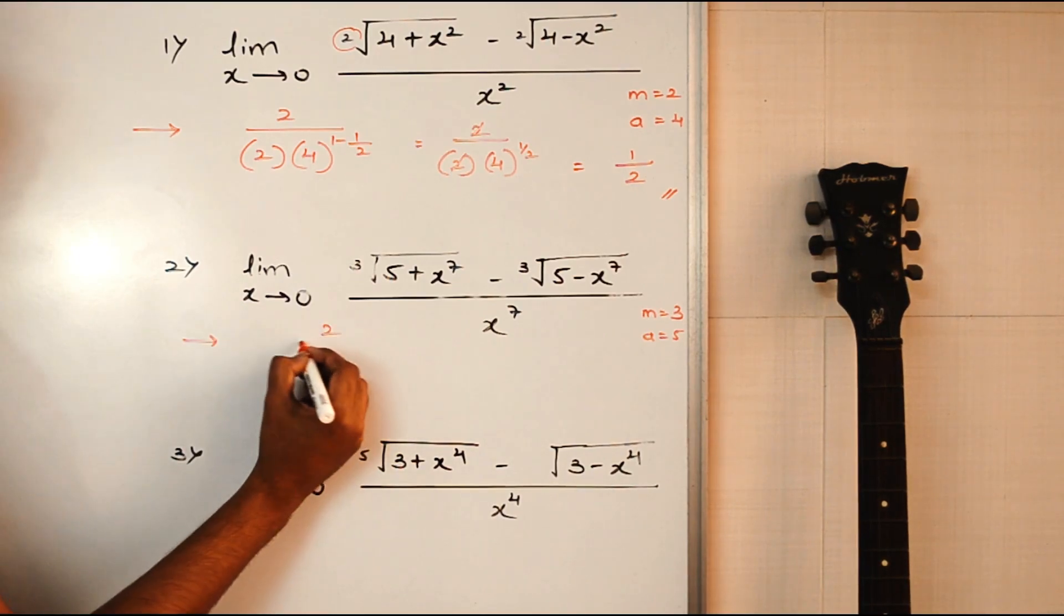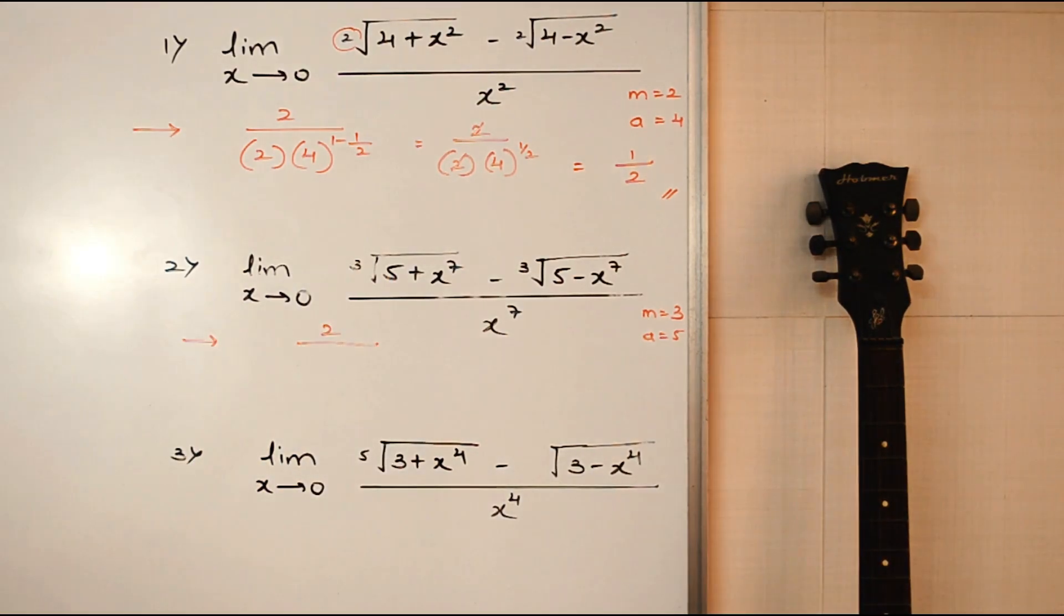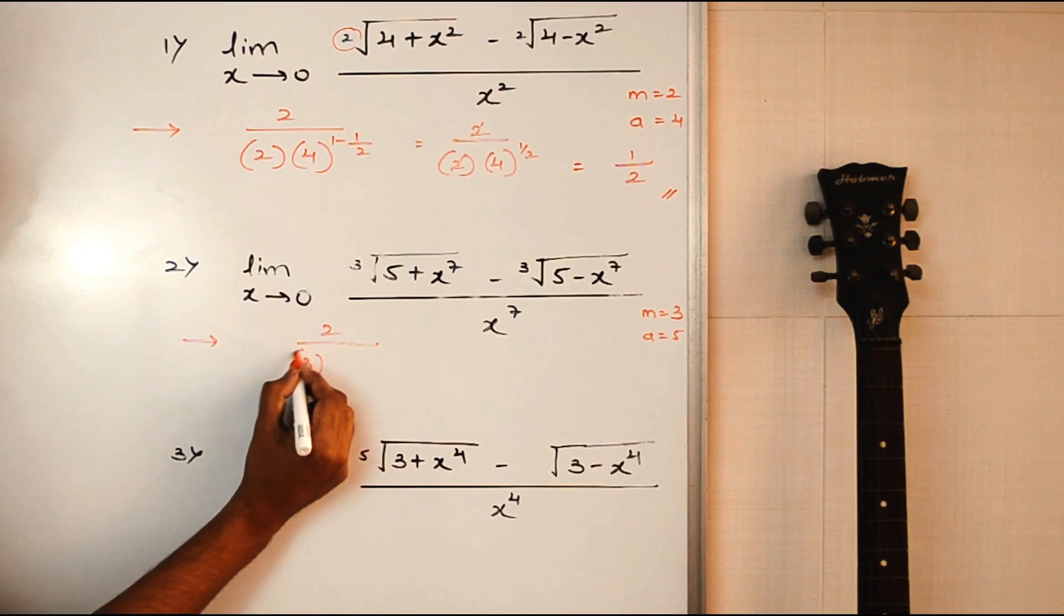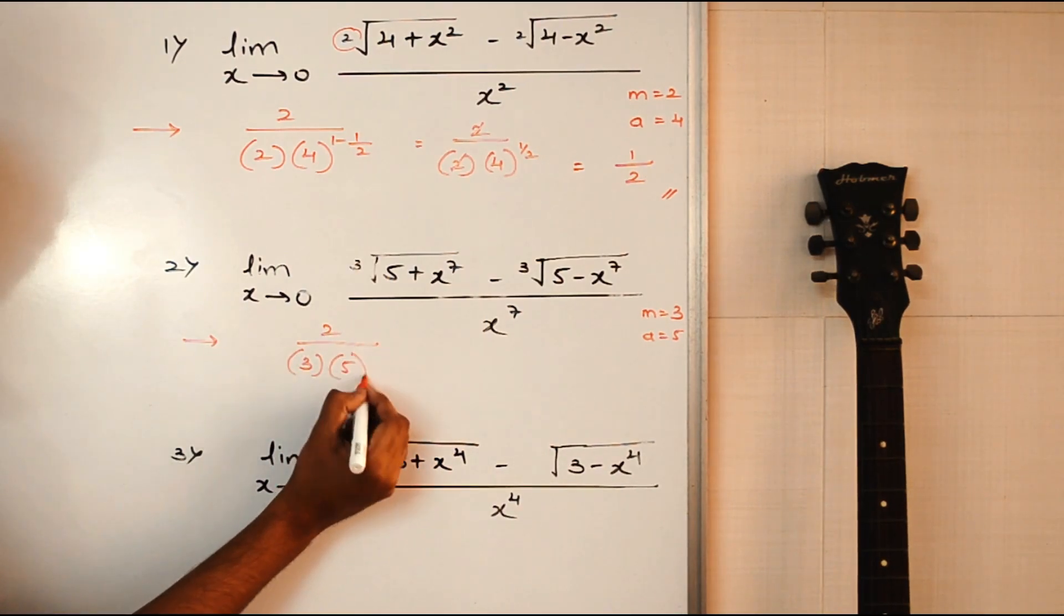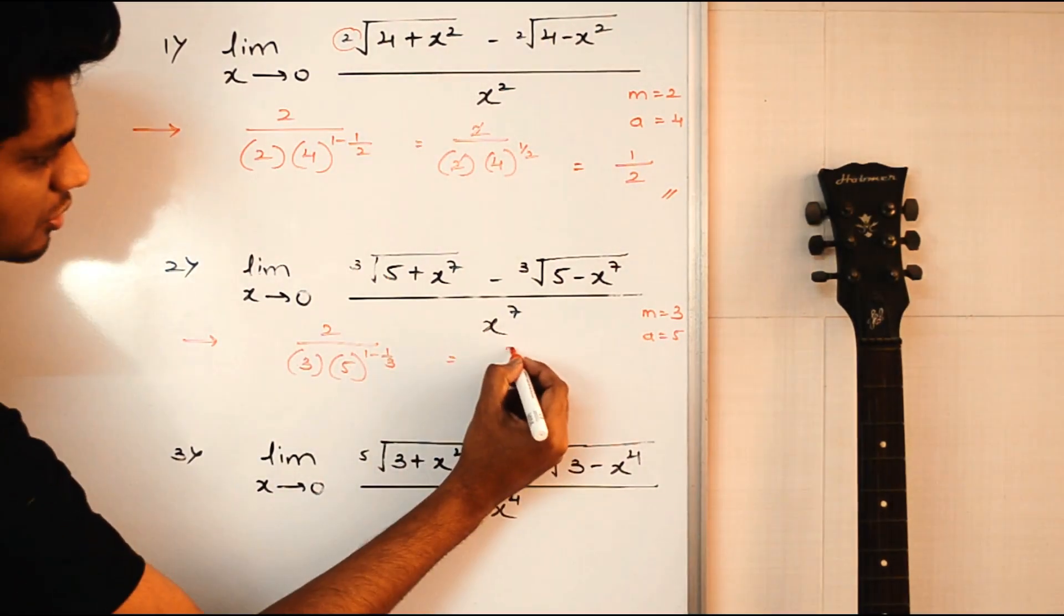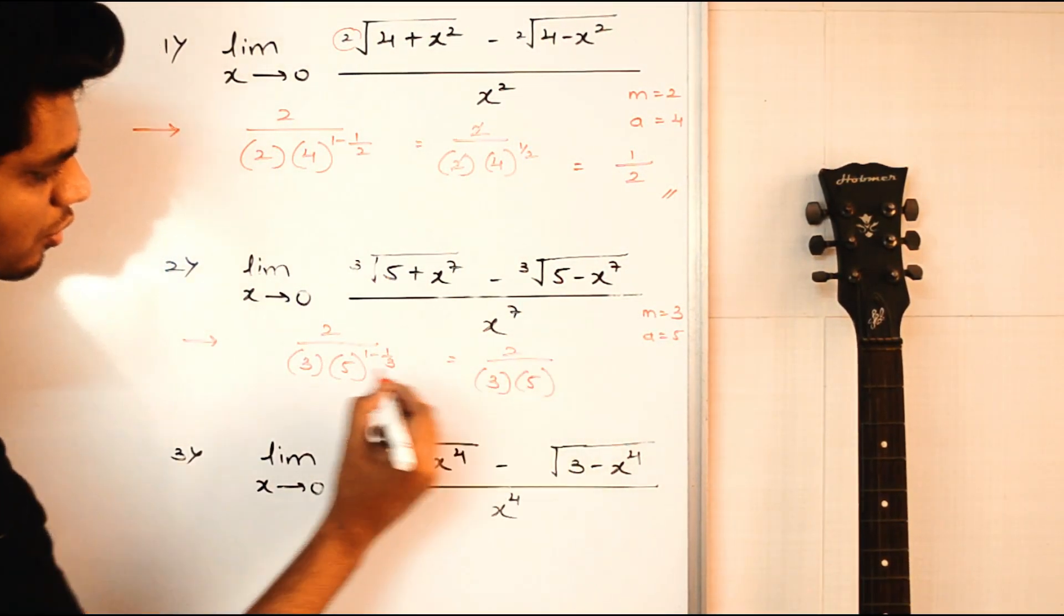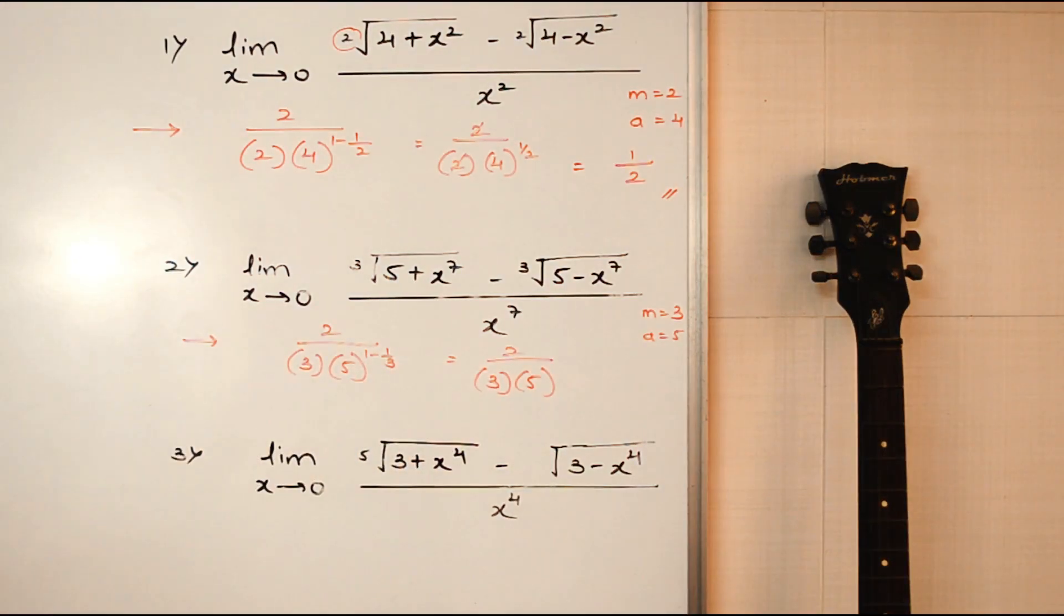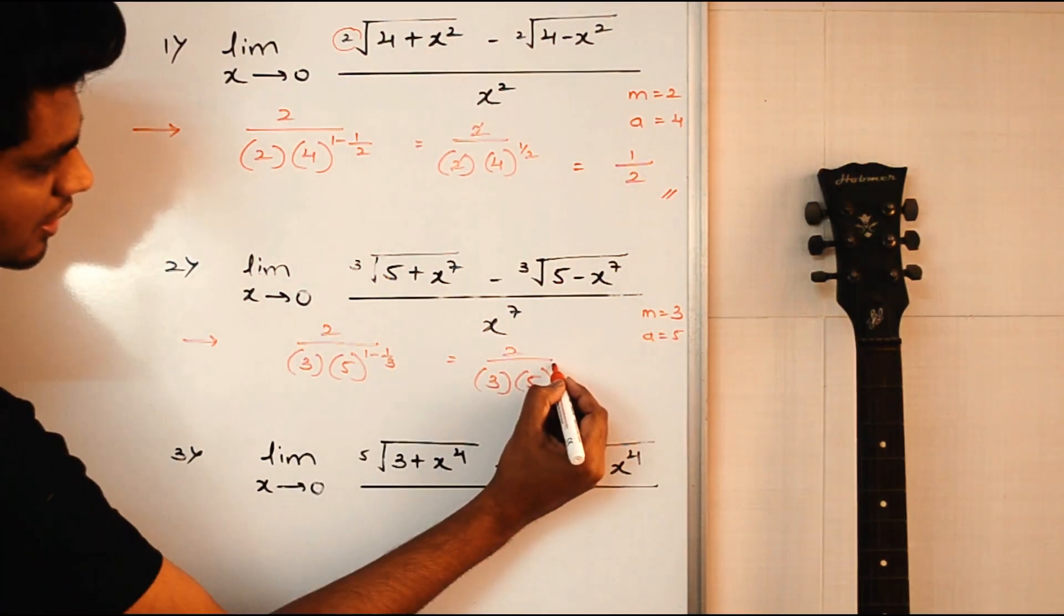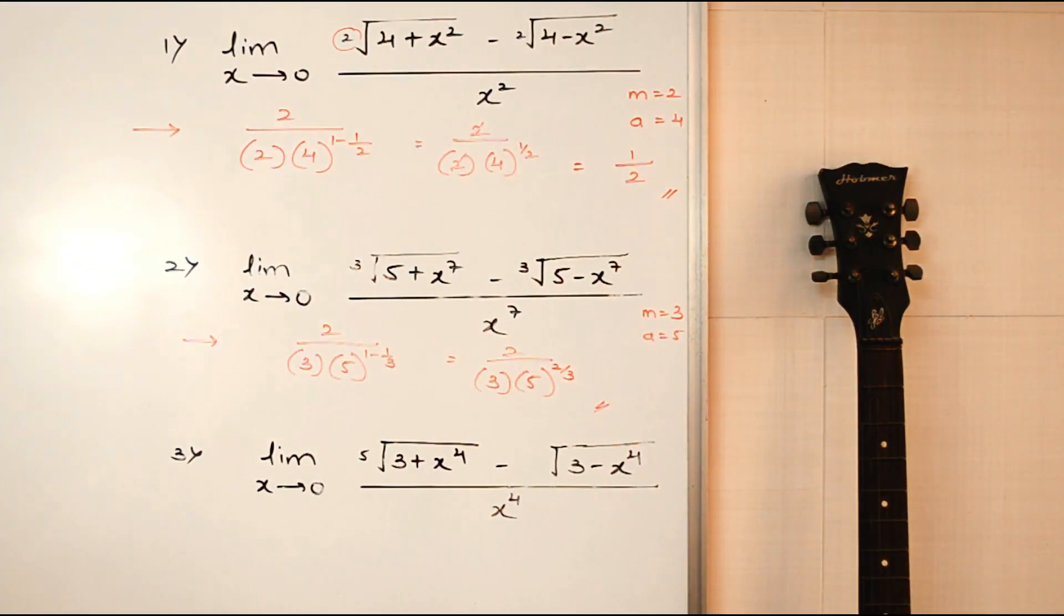This will be 2 upon m into a raised to 1 minus 1 by m. m is 3, a is 5, so 1 minus 1 by 3. This becomes 2 upon 3 into 5 raised to 1 minus 1 by 3. 1 minus 1 by 3 is 2 by 3. And that's it, this is our final answer.